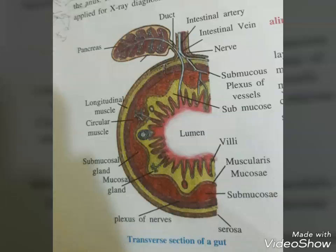The innermost layer lining the lumen of the alimentary canal is the mucosa. This layer forms irregular folds in the stomach and small finger-like foldings called villi in the small intestine. The cells lining the villi produce numerous microscopic projections called microvilli, giving a brush border appearance. This modification increases the surface area enormously. Villi are supplied with a network of capillaries and large lymph vessels called lacteals.